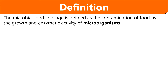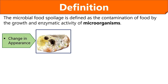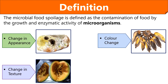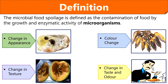Food spoilage by the microorganisms depends upon the pH, moisture and nutrient content of the food. Microbial spoilage of food is evidenced by the change in appearance, change in texture, change in color and change in taste and odor, and such changes make the food unfit for human consumption.